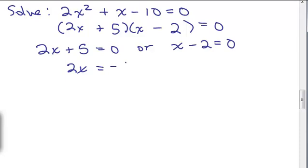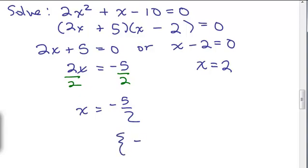So we're going to subtract 5 on this side and the last thing would be to divide by 2. So I'm able to solve for x. The other side is easier. We just add 2 and we're done. All right. So for this particular equation, I have solutions, negative 5 halves and 2.